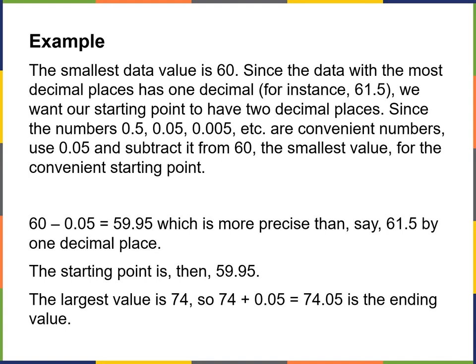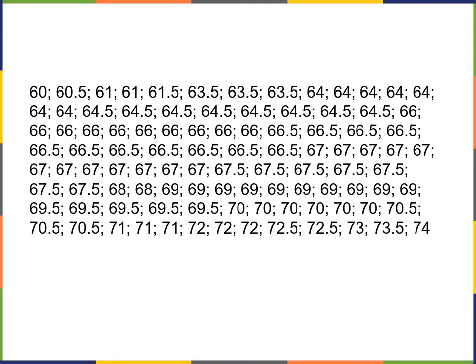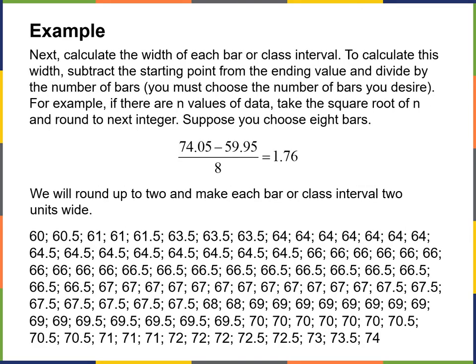Largest value is 74, so we add 0.05 to that — your ending value of your histogram will be 74.05. Next, we calculate the width of each bar or class interval. To calculate this width, subtract the starting point from the ending value and divide by the number of bars desired. In this case, we're choosing eight bars, so: 74.05 minus 59.95 divided by 8, which gives us 1.76.